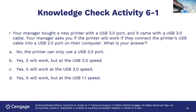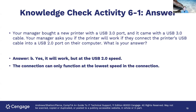Knowledge check: your manager bought a new printer with a USB 3.0 port and a USB 3.0 cable, and wants to plug it into a USB 2.0 port on their computer. Will it work? Option A says no, the printer can only use USB 3.0 — incorrect, because USB is backwards compatible. Option B says yes, it will work but at USB 2.0 speed — correct. Option C says it'll work at USB 3.0 speed — incorrect, you're always limited by the slower of the two. Option D says it'll work at USB 1.1 speed — also incorrect. The connection functions at the lowest speed in the connection.